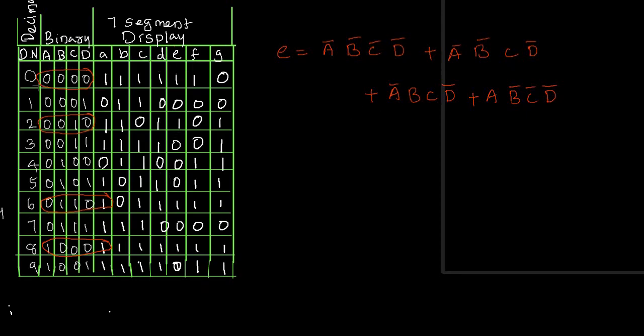We can find the expression for each segment by identifying where it is 1, marking the corresponding binary values, and writing the boolean expression. I hope all of you understand this topic. We will meet in the next video. Thank you.